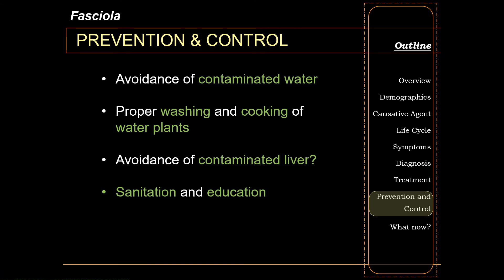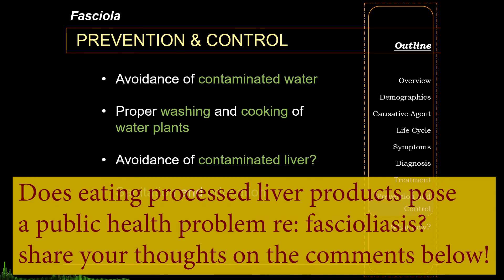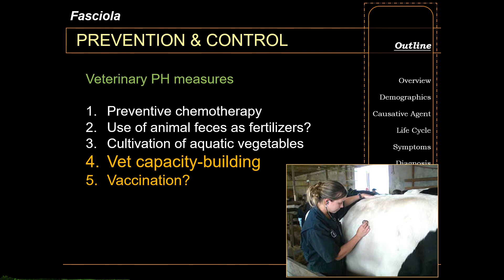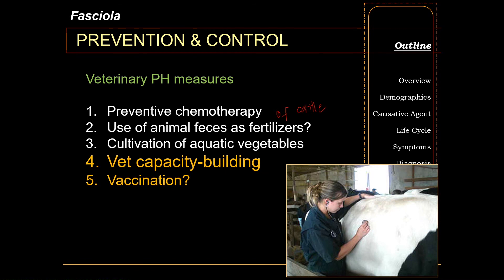Prevention and control of human fascioliasis relies on simple public health strategies: avoidance of contaminated water, proper washing and cooking of water plants, sanitation, and education — especially for those handling food. Under the One Health initiative, control heavily relies on cooperation between doctors and veterinarians. Measures include preventive chemotherapy of cattle, reduction in the use of animal feces as fertilizers, cultivation of aquatic vegetables, veterinary capacity building, and — more recently — vaccination in cattle against Fasciola, still currently in rat models.